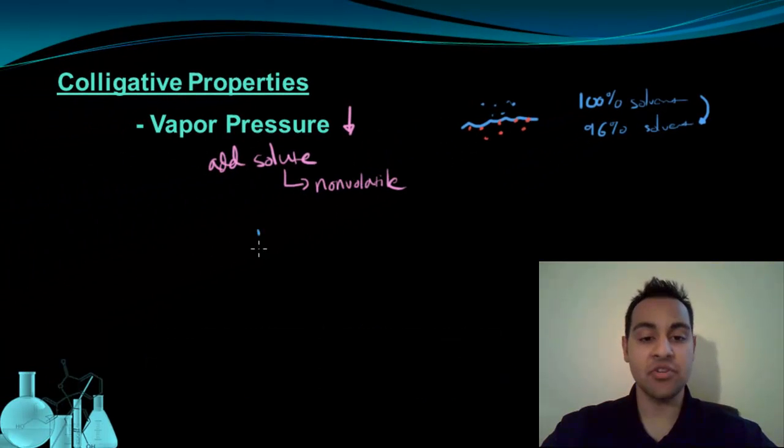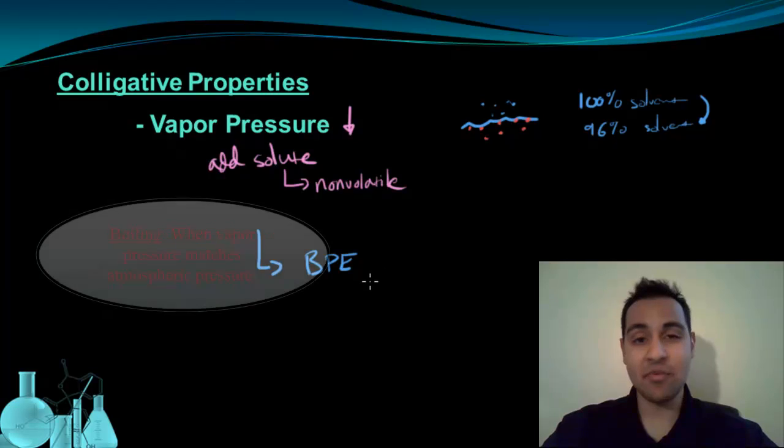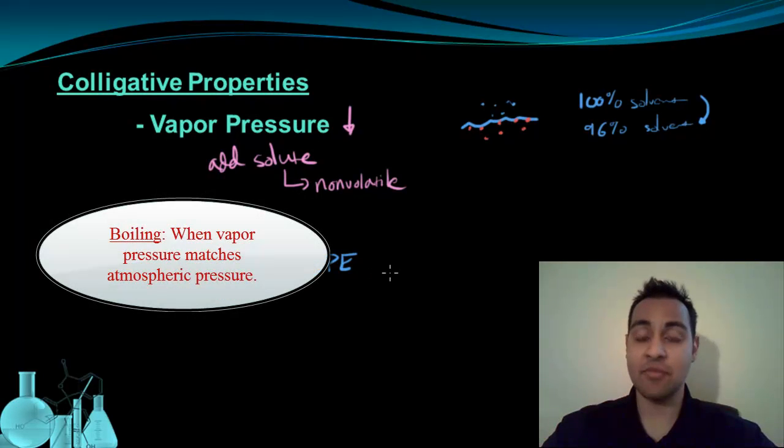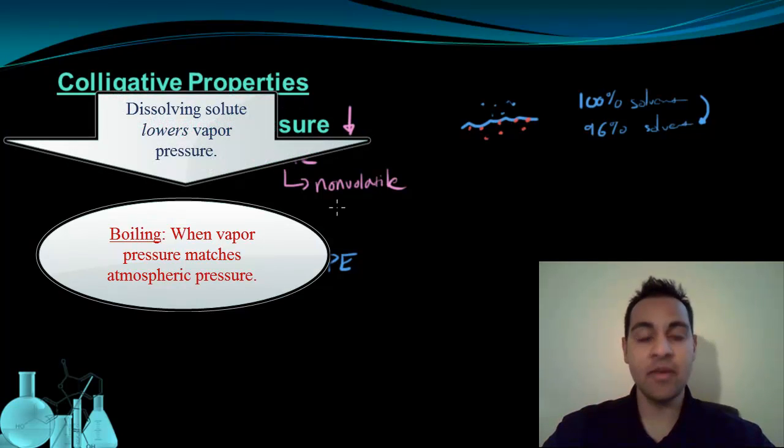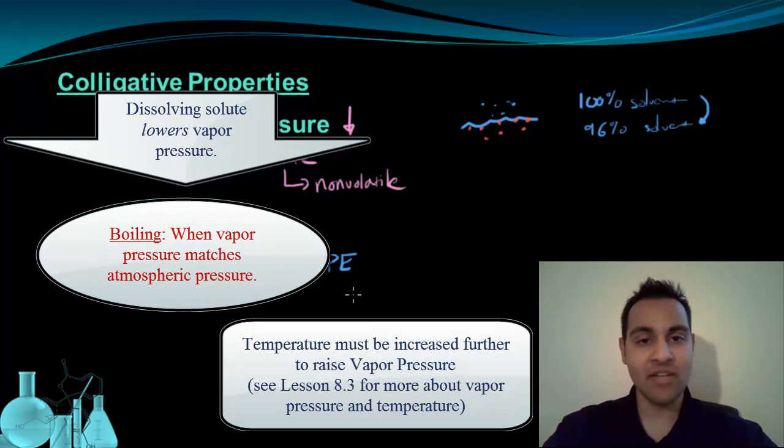This lowering of vapor pressure actually explains the boiling point elevation that we discussed in the last video. Boiling point elevation occurs because for a substance to boil, its vapor pressure has to equal atmospheric pressure. But if the colligative property says that as we dissolve things, the vapor pressure is going down, it requires even higher temperatures to push that vapor pressure up to match atmospheric pressure. That's why the substance has now a higher boiling point. It's because the vapor pressure has been lowered.